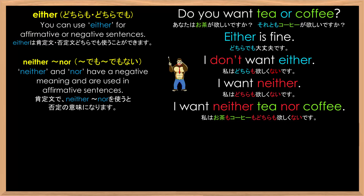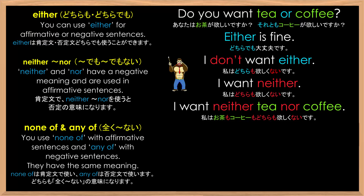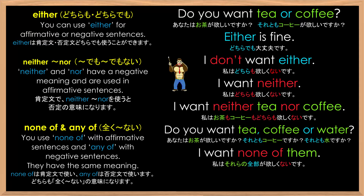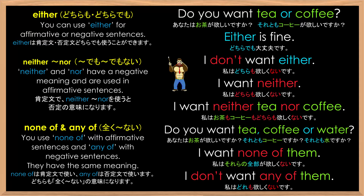Whereas, to make either into negative, you have to use a negative verb or be-verb. You use none of with affirmative sentences and any of with negative sentences — they have the same meaning. For example, 'Do you want tea, coffee, or water?' 'I want none of them.' 'I don't want any of them.'